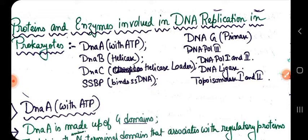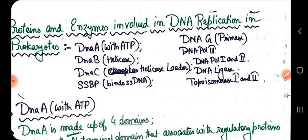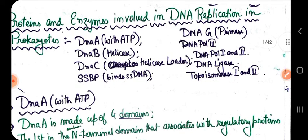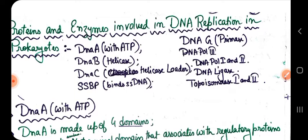DNA polymerase 1 actually removes the RNA primer later on, because we need a full strand of DNA, so DNA polymerase 1 removes that RNA primer and synthesizes DNA in its place. DNA polymerase 2 is mainly associated with repair of DNA — if some mistakes are made by DNA polymerase 3, or external agents cause changes in base pairs (mutations), then DNA polymerase 2 tries to rectify those mistakes.